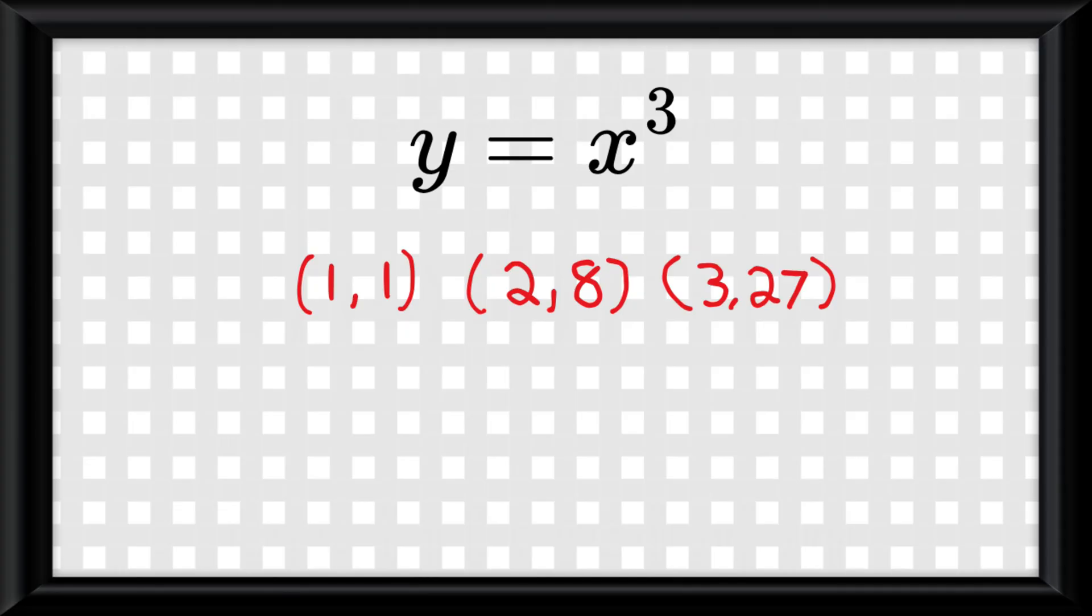To understand inverse functions, let's take the parent cubic function y equals x cubed. We know that the first three points on the graph would be 1, 1, 2, 8, and 3, 27. The inverse of this function would have these points, but simply swapping the x and y.